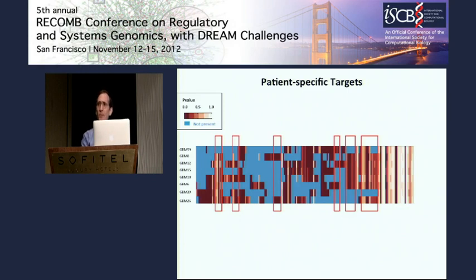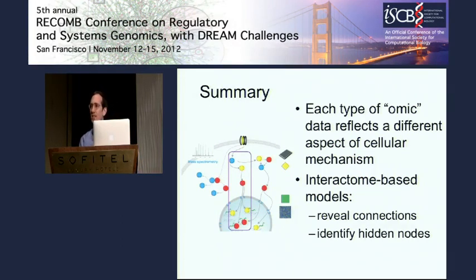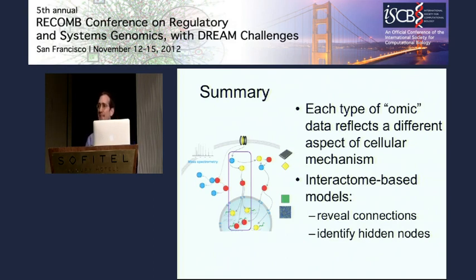To sum up: when we think about these omic technologies, we have to think about them as much more than lists of genes — we have to think about them in the network context, because each technology is telling us something different about what's going on in the cell, and we're going to get different answers depending on which technology we apply. These network models do have the capacity to assemble all these data and find the hidden connections among them.